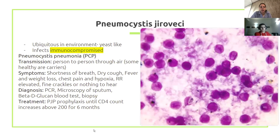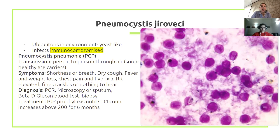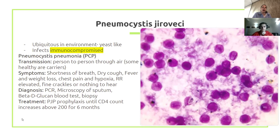Third is Pneumocystis jirovecii, a yeast found normally in the environment that only affects the immunocompromised. It's a major cause of death in AIDS patients who have no ability to fight normal fungal infections. It's transmitted person-to-person because healthy people are carriers. Presentation includes typical pneumonia symptoms. Diagnosis is via PCR, microscopy of sputum, or lung biopsy. Treatment involves prophylactic antimicrobials long-term until CD4 counts increase.